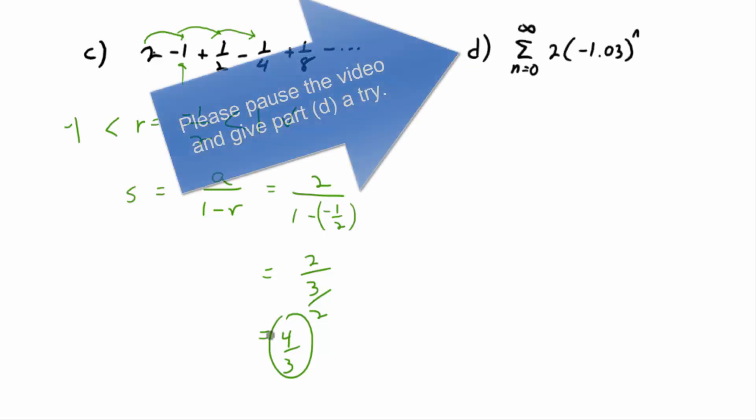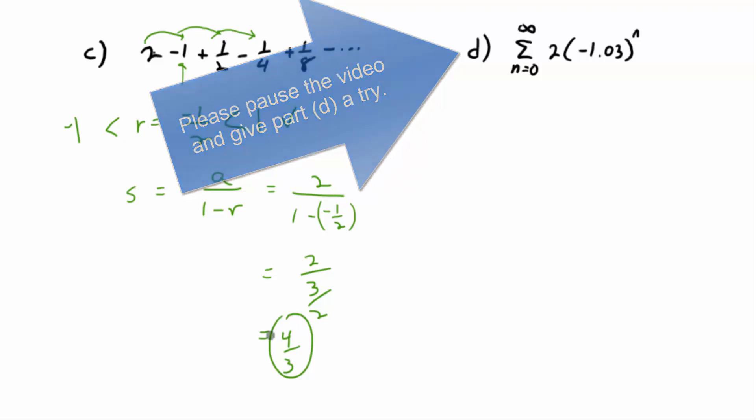Okay, you guys do part D. Anybody done yet? What? Why? What's R? So it's negative 1.03, which is actually less than negative 1, right? Oh, it diverges. We're done.